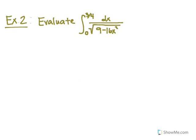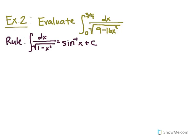In the next example, we're going to evaluate a definite integral from 0 to 3 fourths of dx over the square root of 9 minus 16x squared. We'll use the rule that the integral of dx over the square root of 1 minus x squared equals the inverse sine of x plus c. What we're given kind of looks like it could be in that format if we handle it correctly — but the first value under the radical must be a 1.